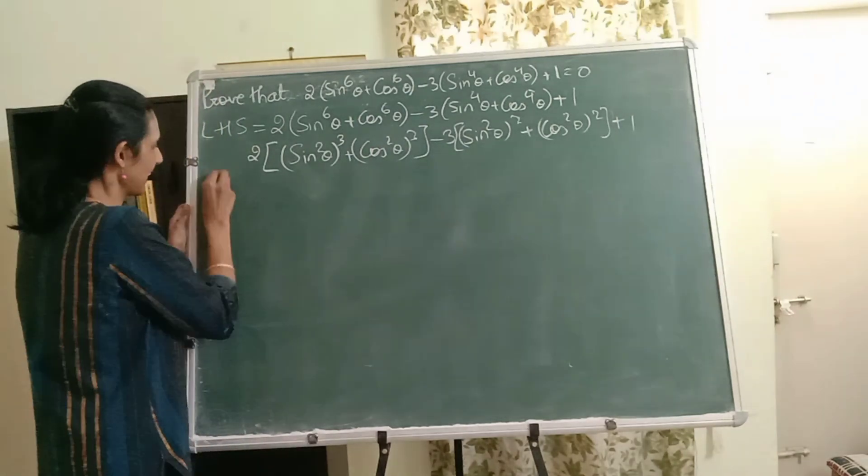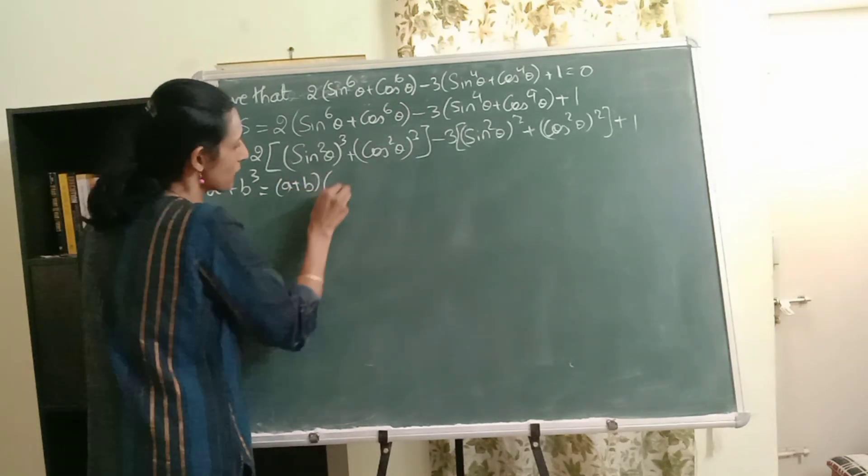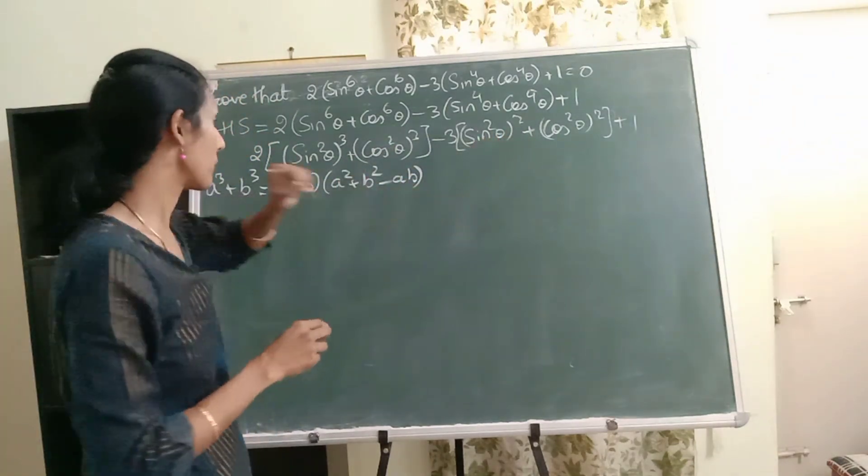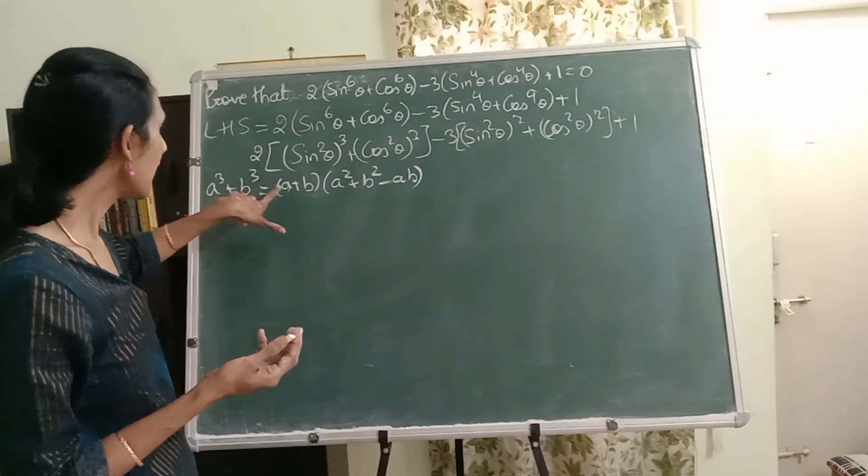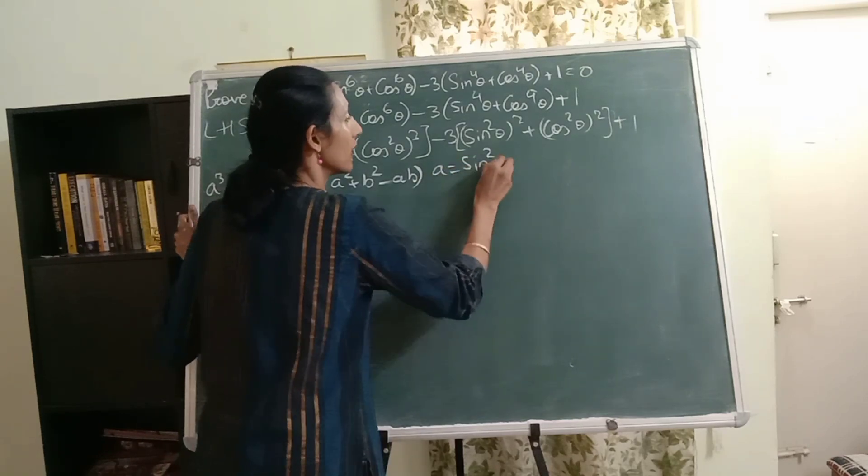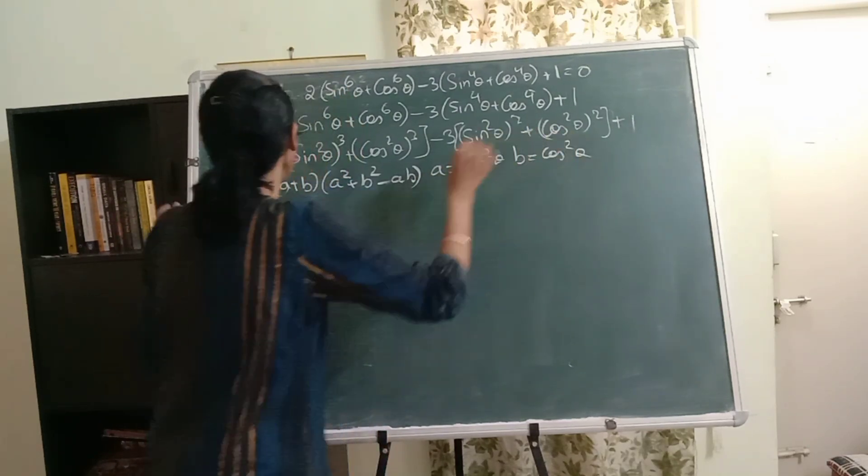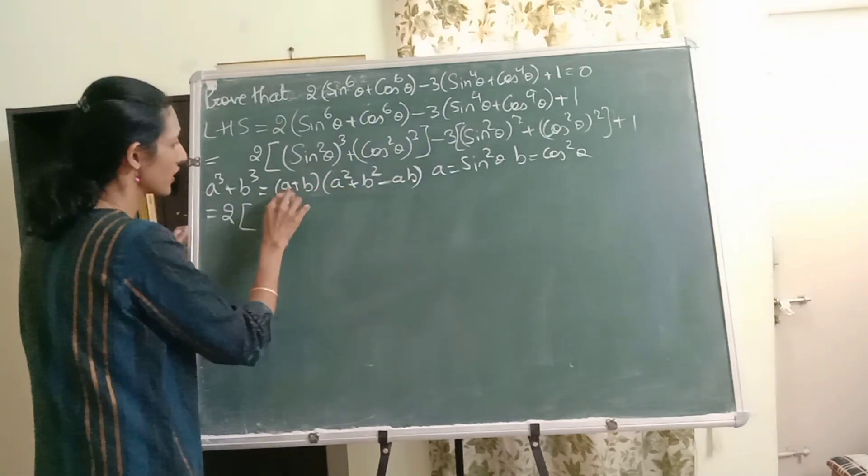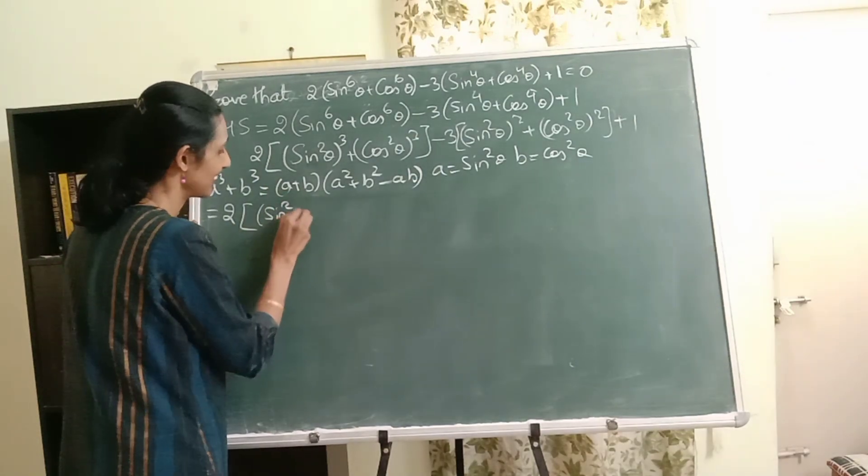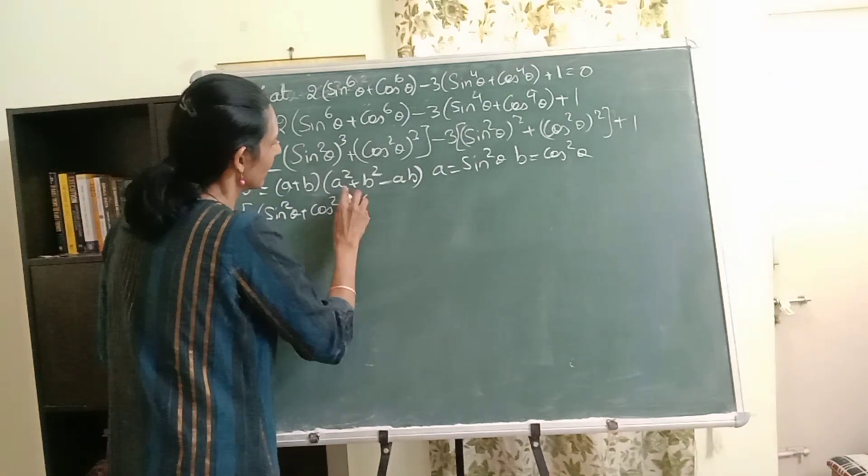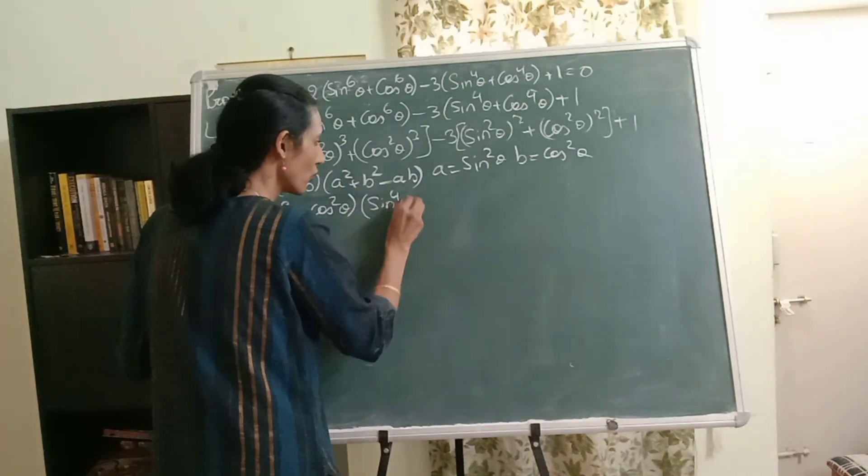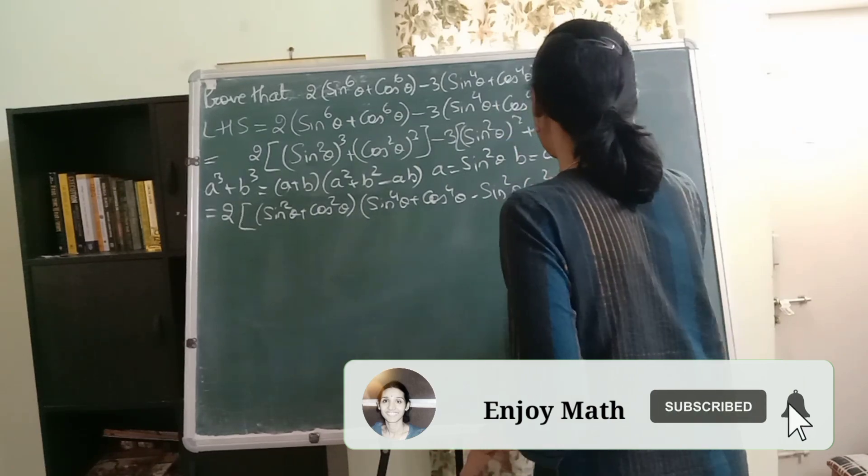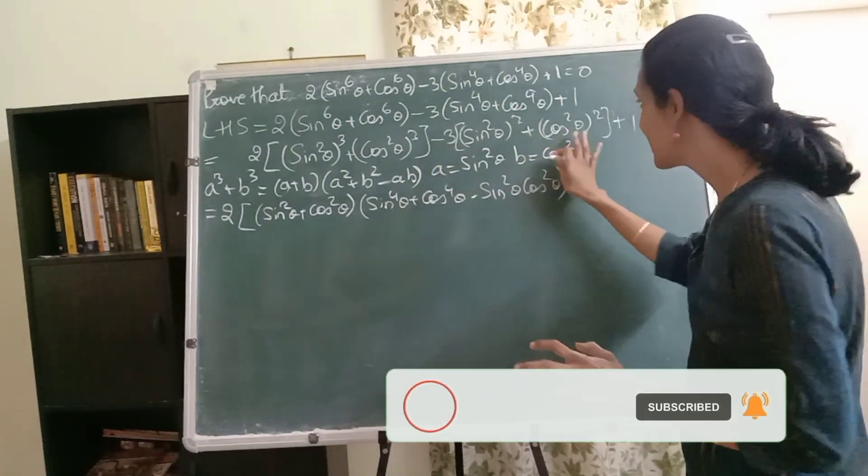Yes, a cube plus b cube is a plus b times a square plus b square minus ab. We don't have any identity with a square plus b square but definitely can't we try this? So what I'll do is I'll take a as sine square theta and b as cos square theta. This two is outside. So instead of this a cube plus b cube I'm going to write this part. What is it? a plus b. What is a? Sine square theta not sine theta. You need to be careful. So now it will be sine raised to 4 theta plus cos raised to 4 theta minus ab. So here it will be sine square theta cos square theta. Now this is only the first term. The remaining terms just copy it as it is.